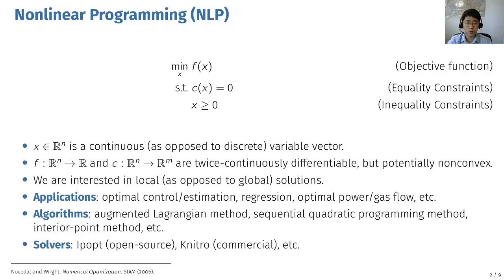Let's first start with some introduction to nonlinear programming. Nonlinear programming, or NLP in short, is an optimization problem expressed by nonlinear functions. Typical NLPs are composed of multivariate decision variable X and sufficiently smooth but non-convex objective and constraint functions. Due to these non-convexities, the problem becomes a non-convex optimization problem overall.